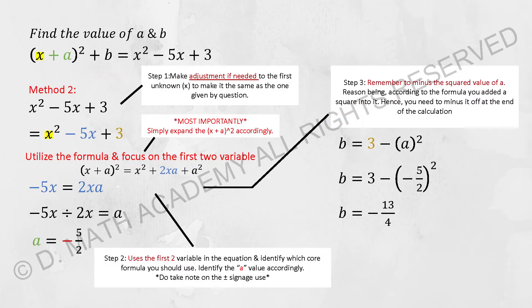Whereby for method 2, this is the correct one that you should follow. First thing first, you need to only focus on the x² - 5x that was given to you. So you know that when you expand the (x + a)², the -5x is actually corresponding to the 2xa over there.